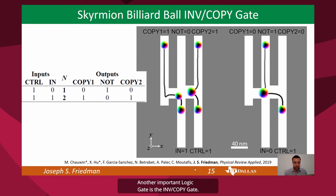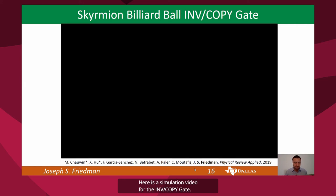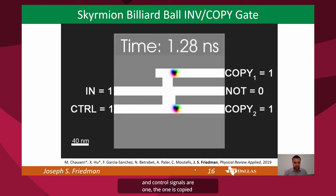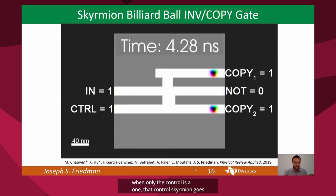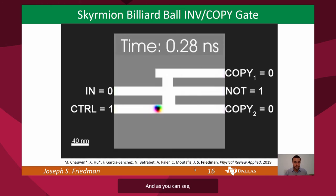Another important logic gate is the inverter copy gate. We will provide a skyrmion to the control input during each clock cycle, and we will use it to either duplicate or invert the input skyrmion — both will happen simultaneously. Here is a simulation video for the inverter copy gate. When both the input and control signals are 1, the 1 is copied to the two copy terminals. When only the control is a 1, that control skyrmion goes to the NOT output terminal, and it will also copy the 0 input.